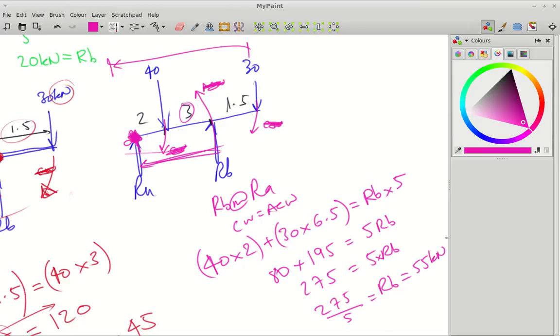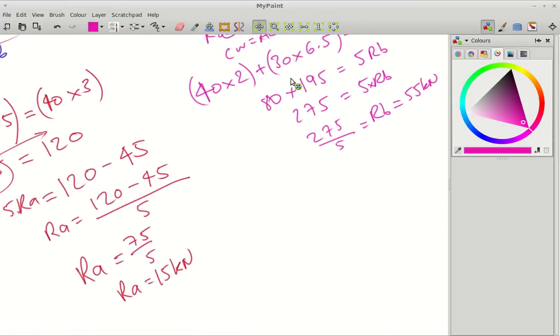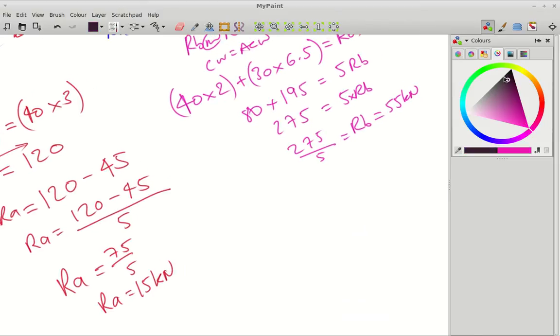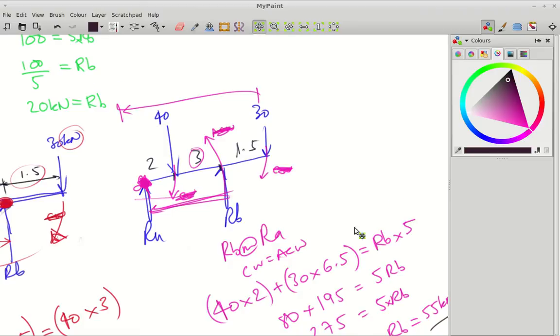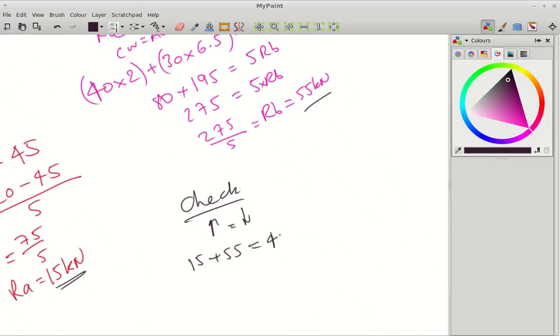Alright, let's do a check. So, for this, we're going to do check up equals down. So, up, we've got 15 plus 55 equals whatever's coming down, which is going to be 40 add 30 equals 40 plus 30. So, 15 add 55 is 70. 40 add 30 is 70. Oops. Put 700 like an idiot. 70. That checks.